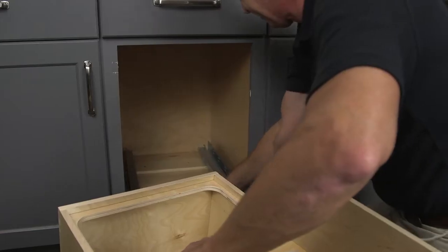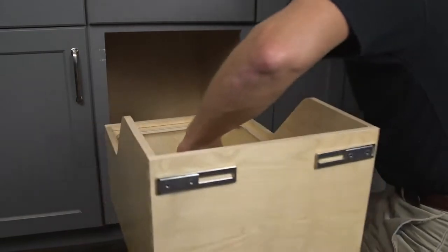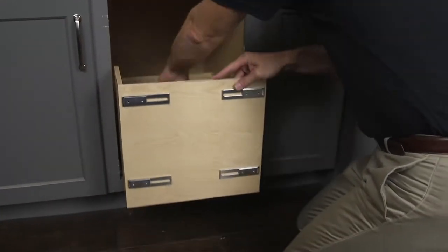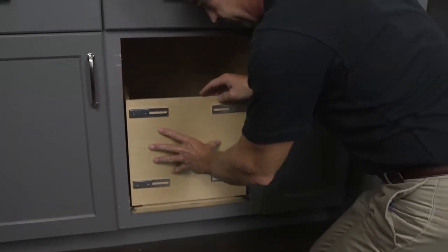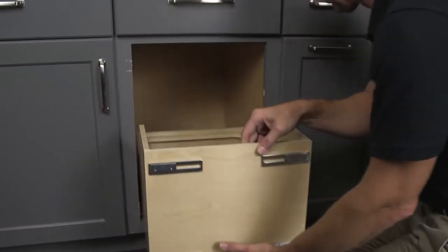Place the trash organizer on the undermount slides and push it into the cabinet until you hear the clips lock into place. Operate unit to ensure proper clearances.